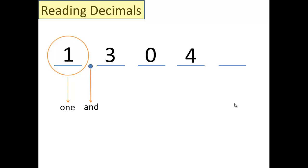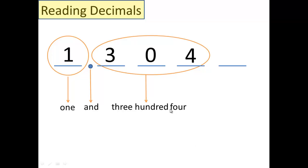Now this last part has two steps. One thing is you circle what's in there and just say it — ignore the decimal point. Just this number here in the circle — how would you say it? That's 304, and don't you dare put an 'and' in there. The 'and' is for the decimal point only. That's 304. And the very last thing you do is find the last place name all the way to the right, and you just say what name it is. Thousandths is right. So the full name of this is: one and three hundred four thousandths.